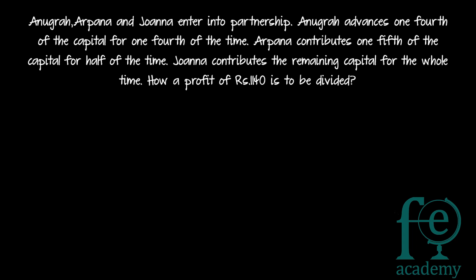So how is the profit to be divided? The profit is given and we need to find the ratio of the principals. For determining the ratio, the actual amount is not necessary. It is given that Anigradh is giving one-fourth of the capital for one-fourth of the time, so the contribution of Anigradh will be one-by-four into one-by-four.